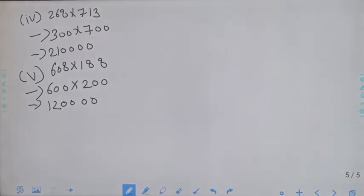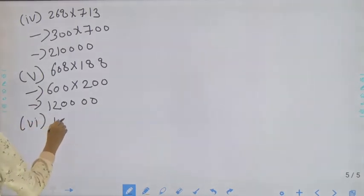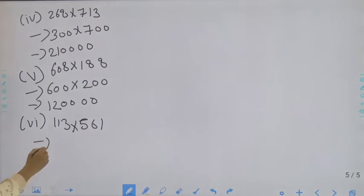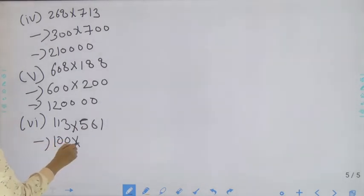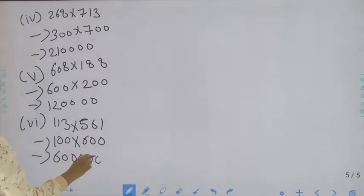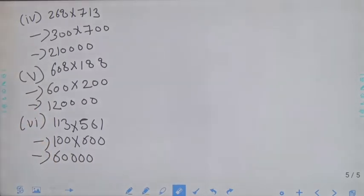Now move to the sixth part: 113 into 561. 113 will round off to 100 and 561 will round off nearest to 600. 1 into 6 and four zeros — it will be 60,000. Students, you have to do all these parts in your maths notebook. That's all for today, thank you class.